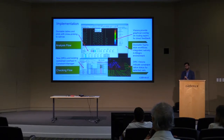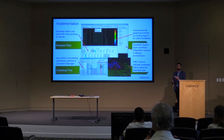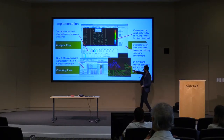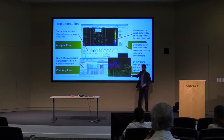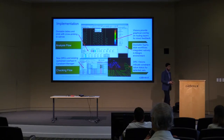The checking flow also gives you a functionality called DRC vision, which provides an alternative way to see constraints. Instead of DRC markers, it shows things in colored form — what is working okay and what is not — rather than traditional DRC markers.